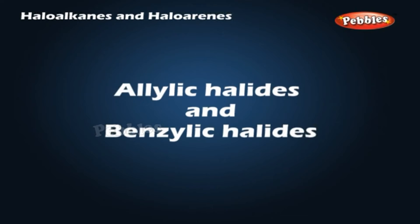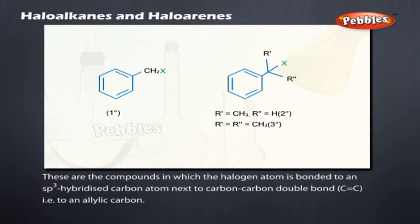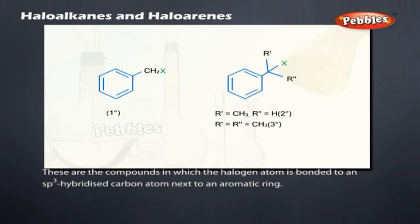Allylic and benzylic halides are compounds in which the halogen atom is bonded to an sp3 hybridized carbon atom next to a carbon-carbon double bond (i.e., to an allylic carbon), or next to an aromatic ring, respectively.